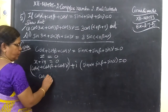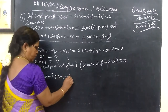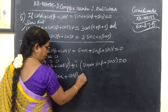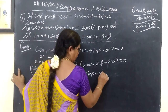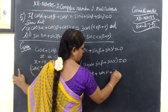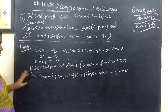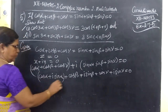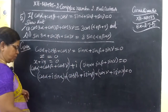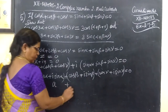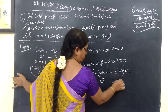Now, this is (cos α + i sin α) + (cos β + i sin β) + (cos γ + i sin γ) = 0. So let a = cos α + i sin α, b = cos β + i sin β, c = cos γ + i sin γ, and a + b + c = 0.